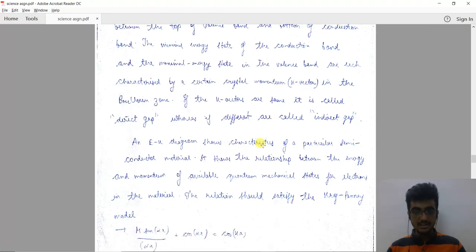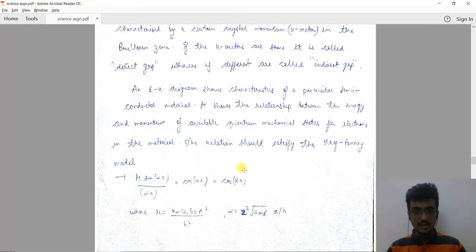An E-K diagram shows characteristics of a particular semiconductor material. It shows the relationship between the energy and momentum of available quantum mechanical states for electrons in the material. The relation should satisfy the Kronig-Penney model, which is given by this.